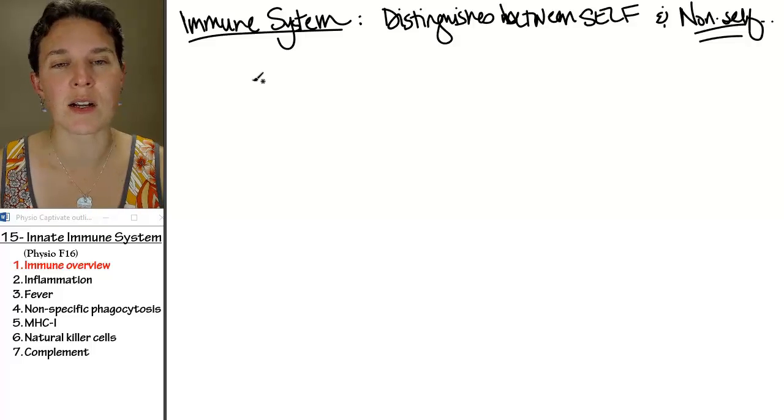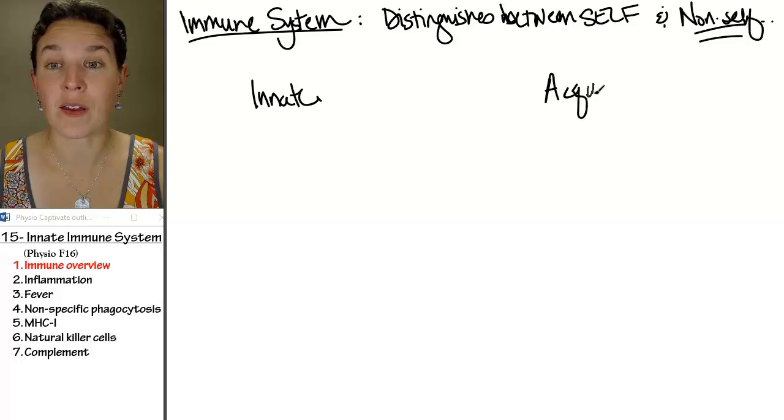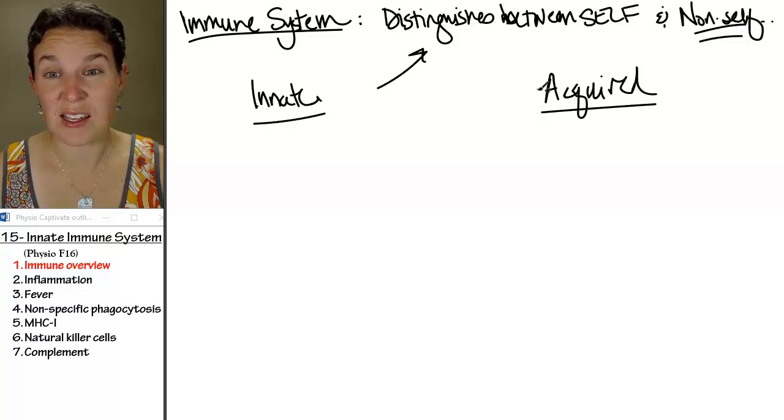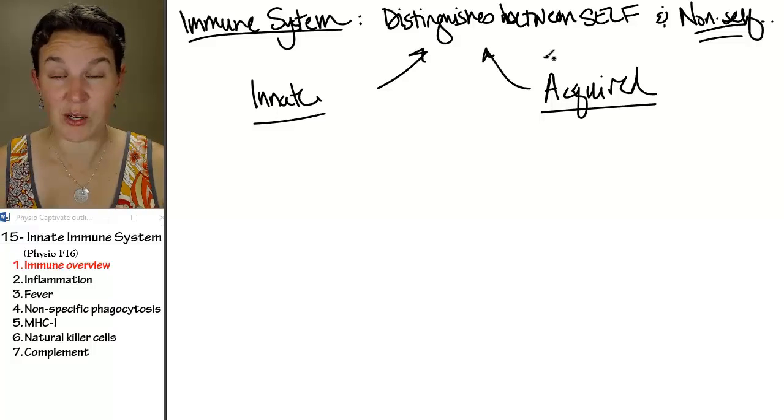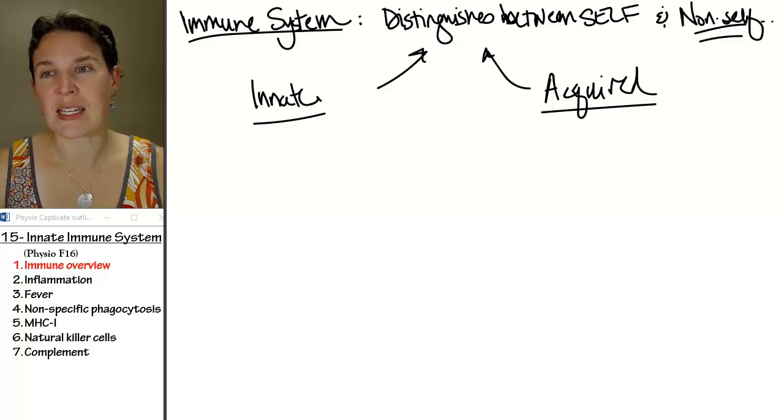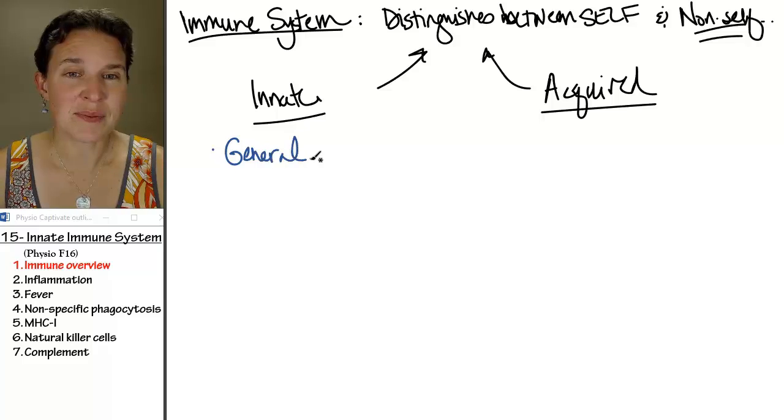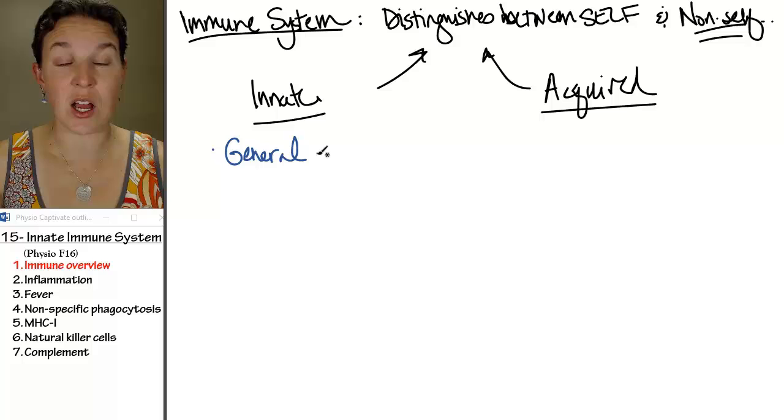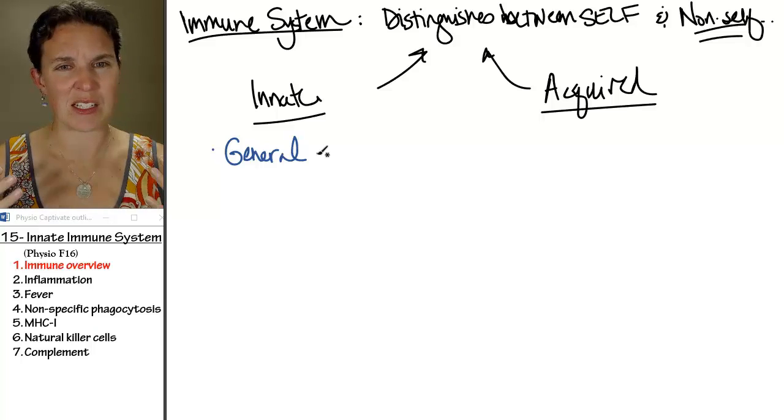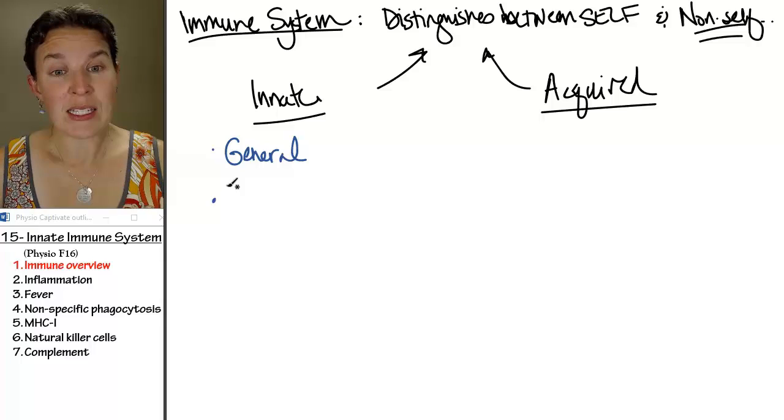So our categories are the innate immune system and the acquired, and both of them function in ultimately distinguishing between self and non-self and battling. The innate immune response is general. Since this is the one we're going to talk about today, we'll identify what that means. What does it mean if it is a general response?